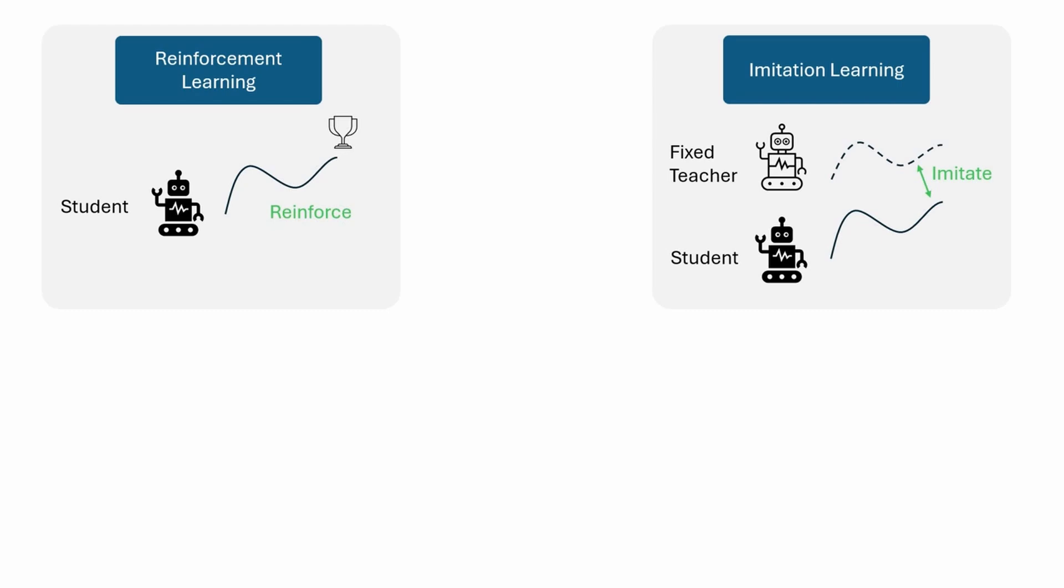Nevertheless, privileged imitation learning faces a key challenge. The student might be unable to imitate the teacher's behavior due to partial observability.